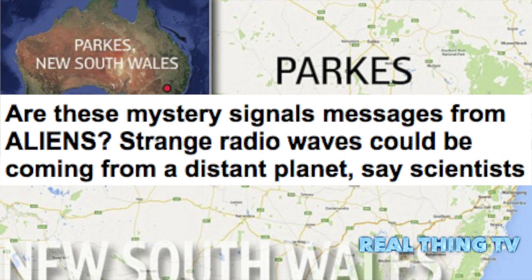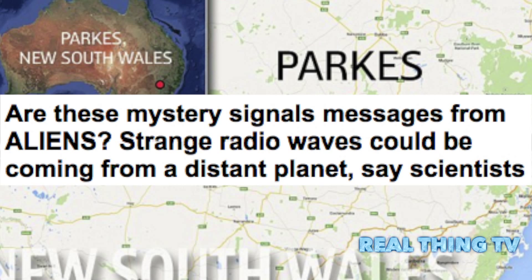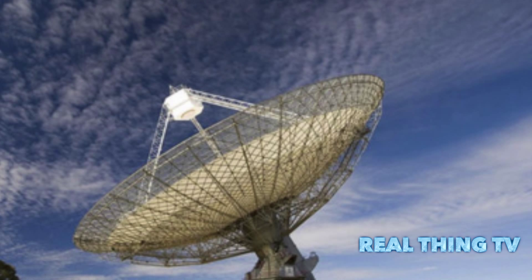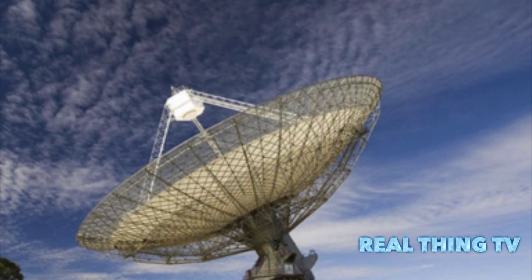Are these mystery signals messages from aliens? Strange radio waves could be coming from a distant planet, say scientists. Scientists are trying to work out what is causing fast radio bursts, or FRBs. The strange signals occur for a few milliseconds.